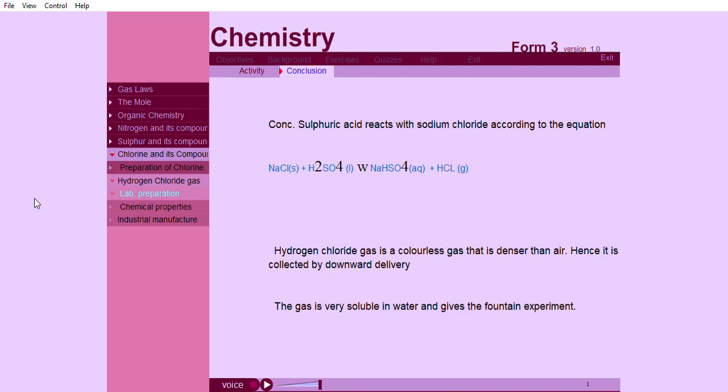Hydrogen chloride gas is a colorless gas that is denser than air. Hence, it is collected by downward delivery. The gas is very soluble in water and gives the fountain experiment.